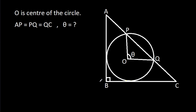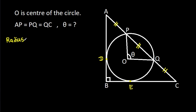In this video, we have been given a right-angle figure in which AP is equal to PQ is equal to QC, and angle POQ is theta. We have to find theta. Suppose this point is D and this point is E, and suppose the radius of this circle is equal to R.